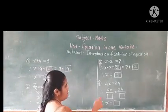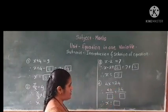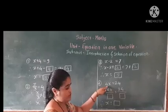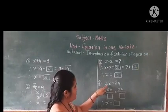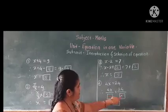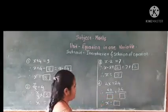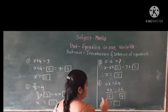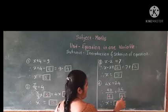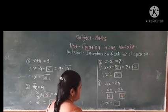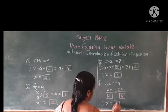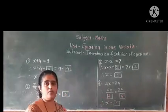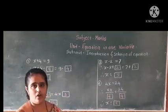Next example: 4x is equal to 24. Here 4 and x are in multiplication form on the left hand side, so we divide both sides by 4. The 4 gets cancelled, only x remains, and 24 divided by 4 gives our answer 6. So the value of x is 6.